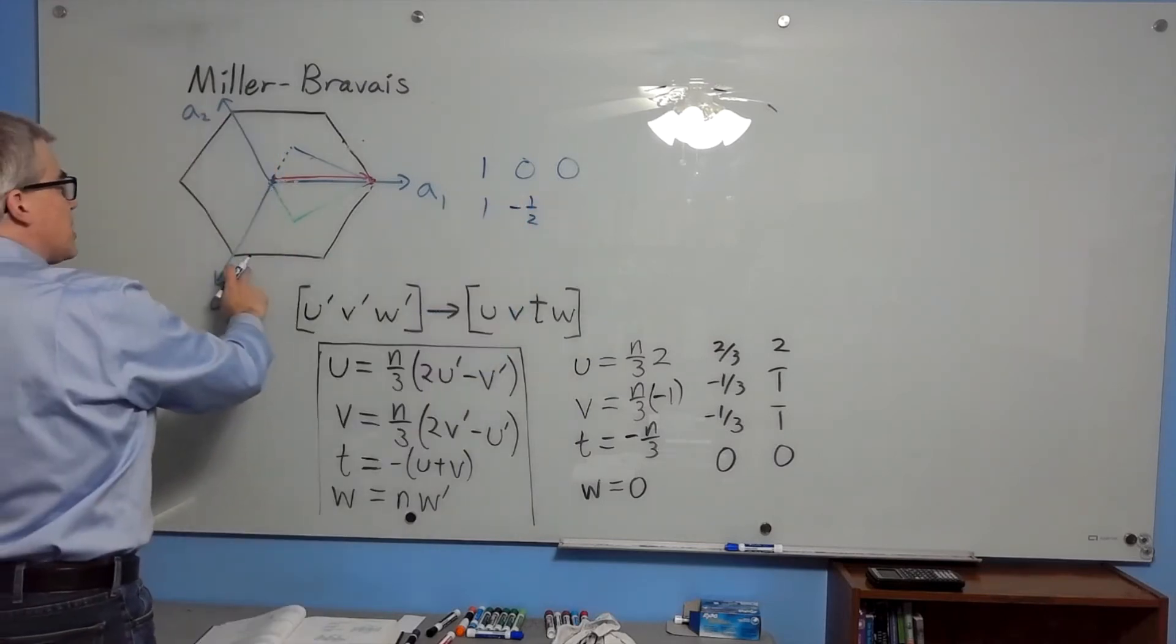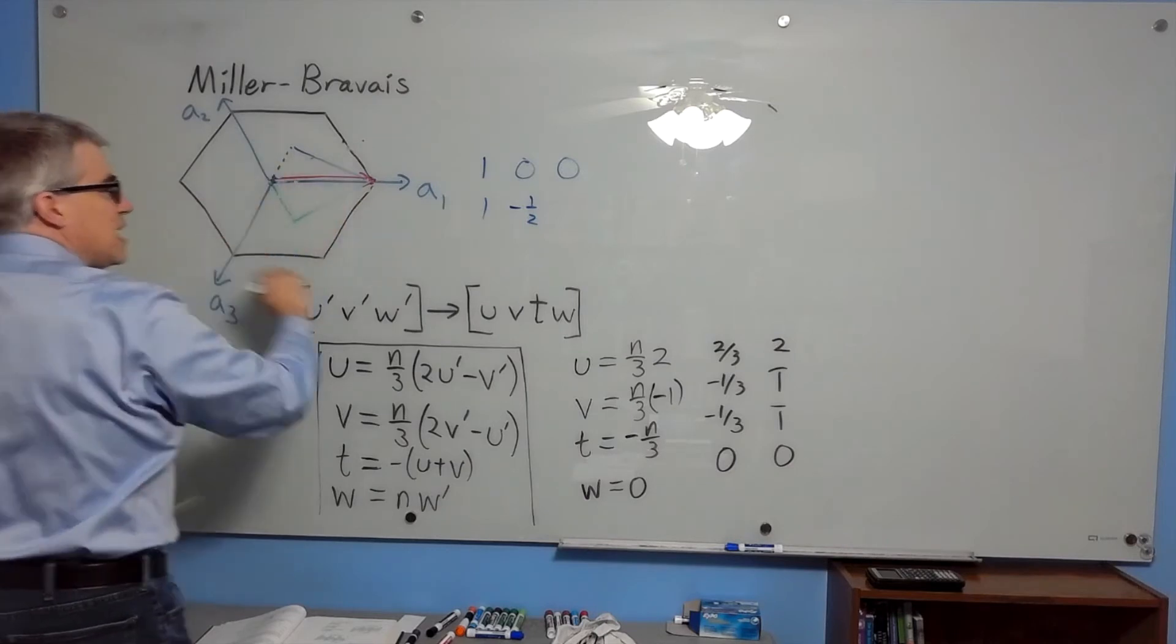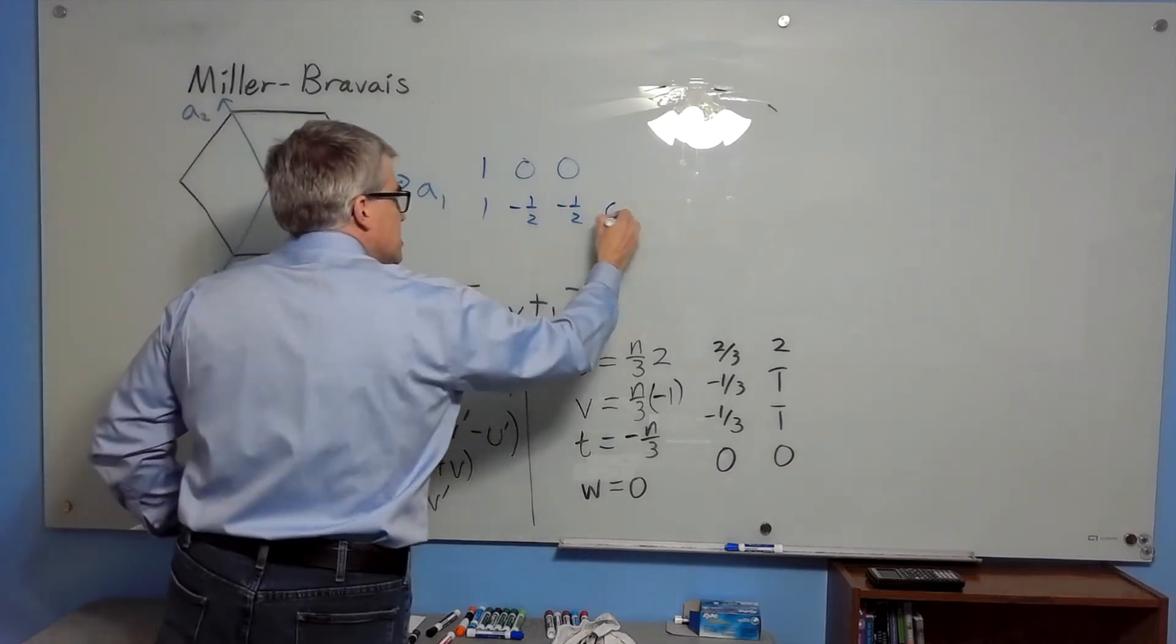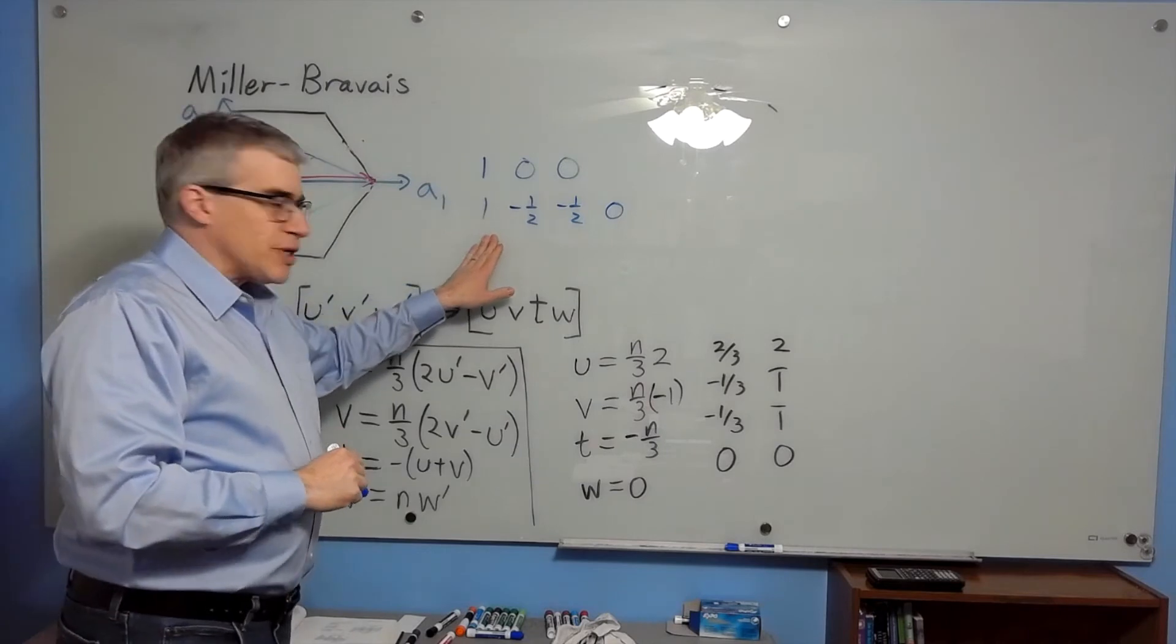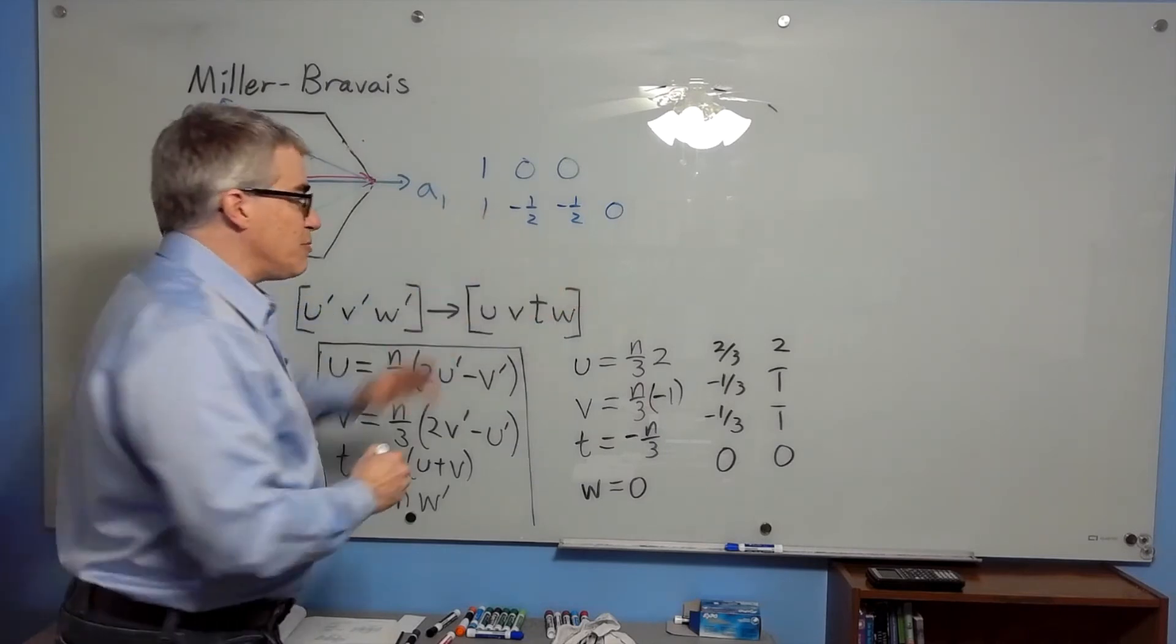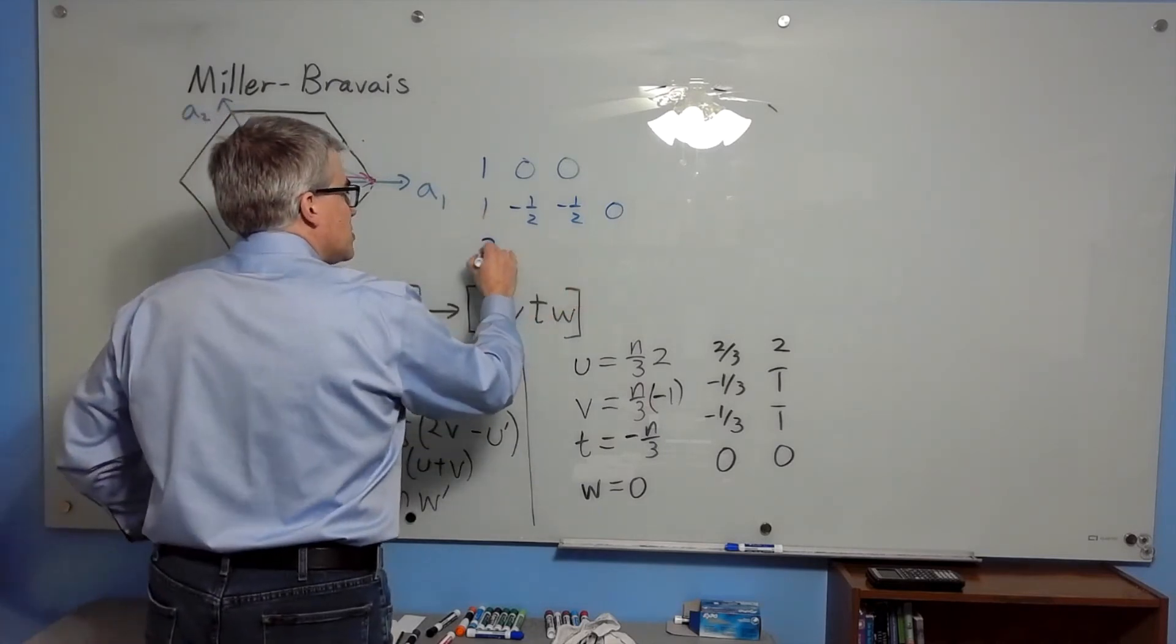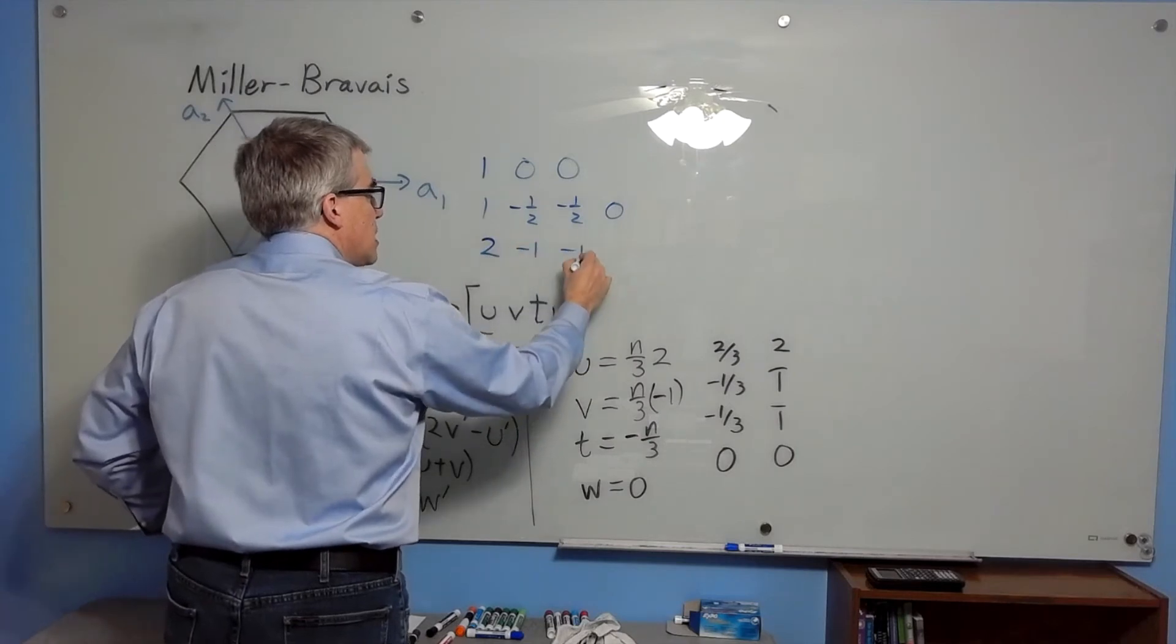In the a3 direction, likewise, this has a negative one-half component. In the z direction, it's 0. From here, we do the usual trick of clearing out the fraction. So we multiply by 2, and that would give us 2, negative 1, negative 1, 0.